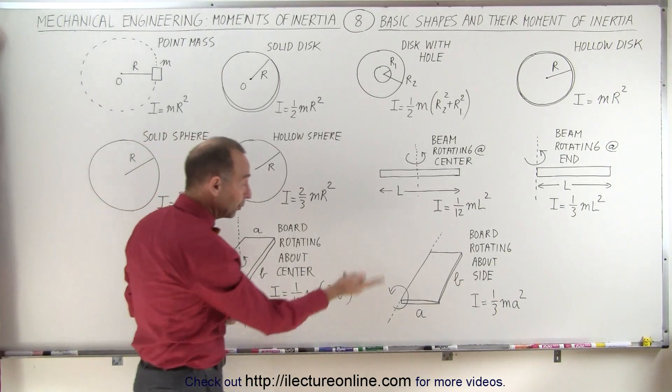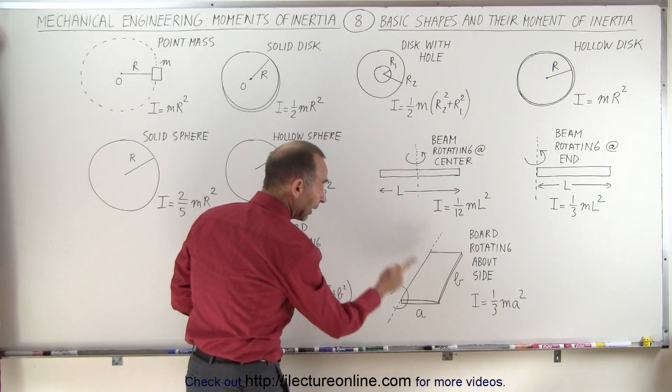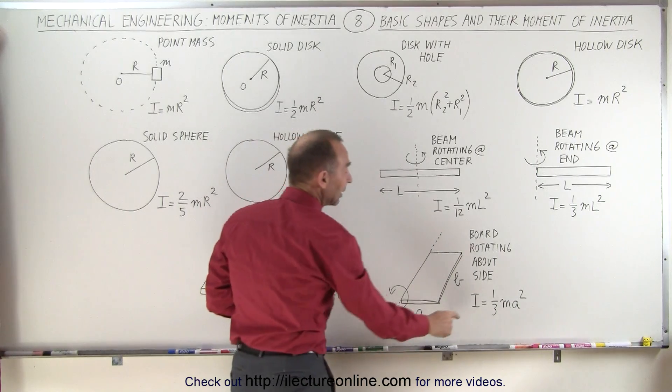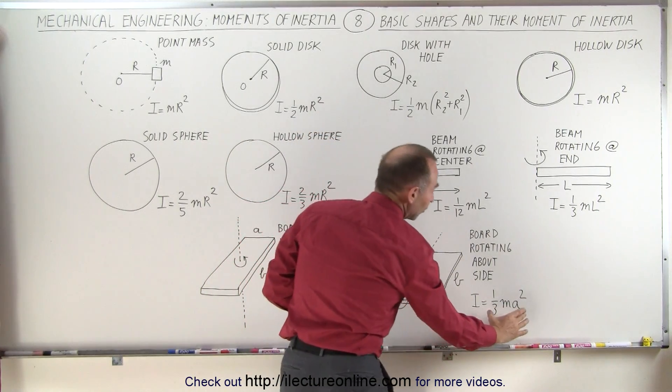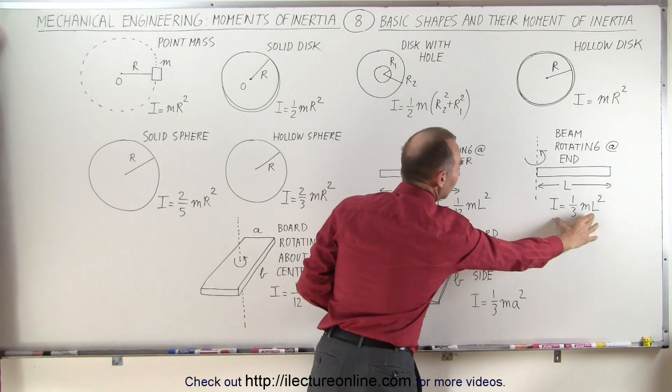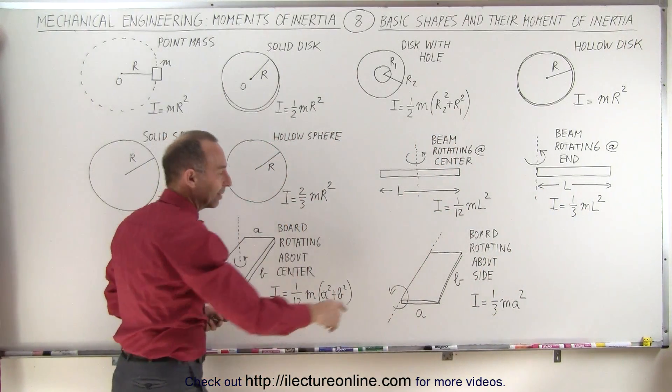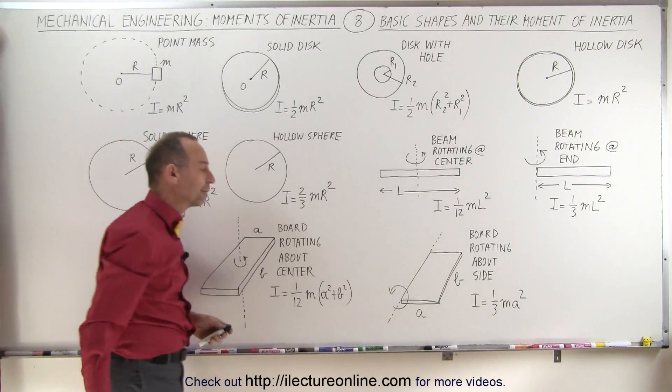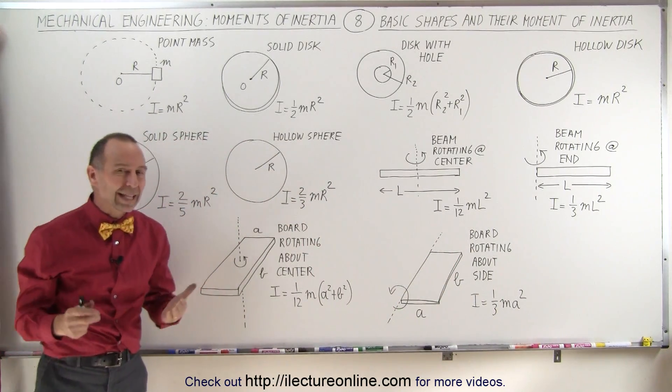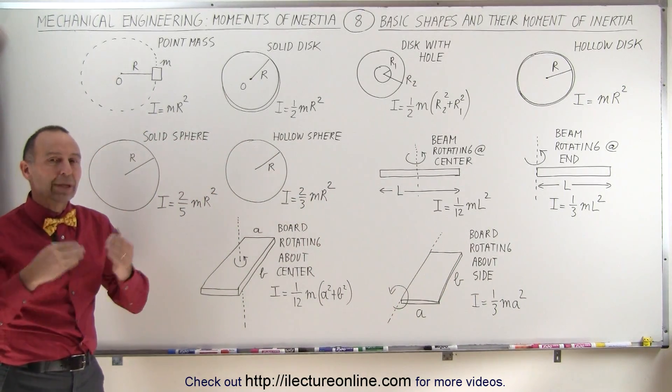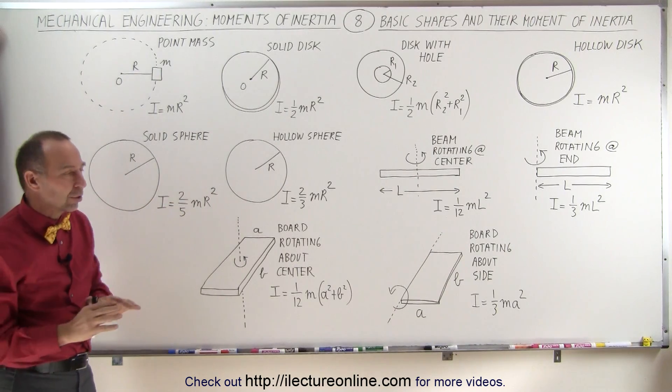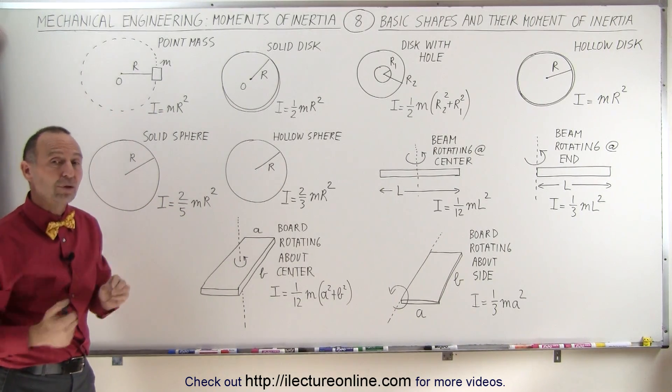If the board rotates on its side, then I equals 1/3 mA squared. This equation looks the same as that equation because it has the same principles. Notice the length of the board doesn't matter for that equation. You can see that moment of inertia is related to how mass is distributed relative to the rotational motion.